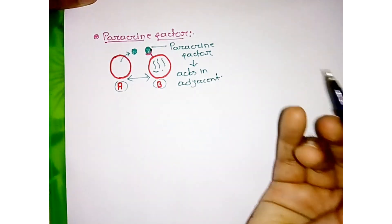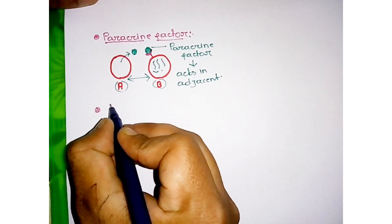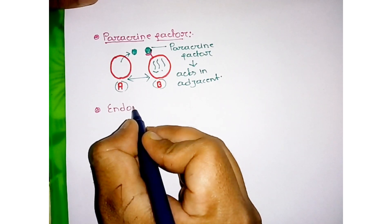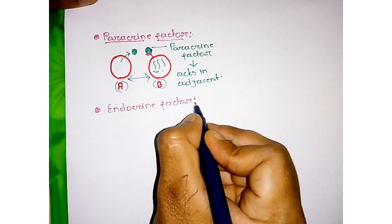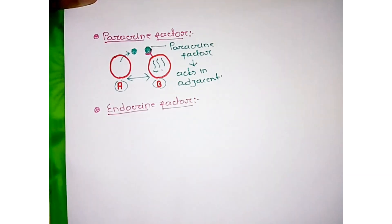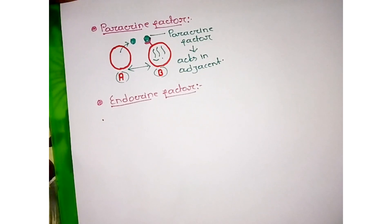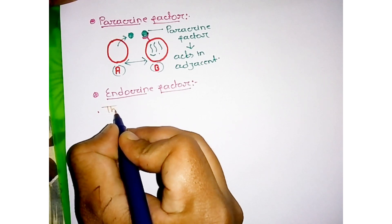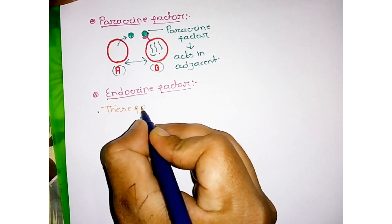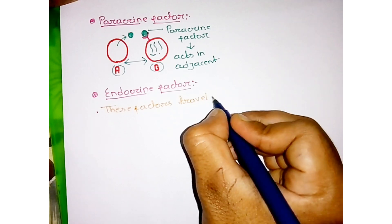Now the next is endocrine. What is endocrine factor? Endocrine factors such as hormones are called endocrine factors. There are several types of hormones in our body, and the main characteristic of the endocrine factor is that it travels through blood.